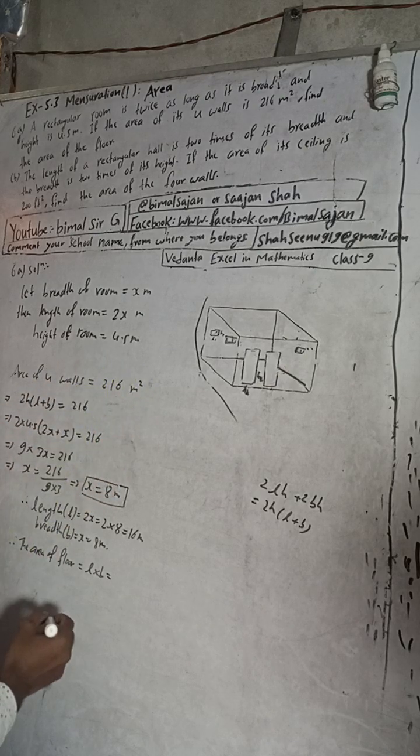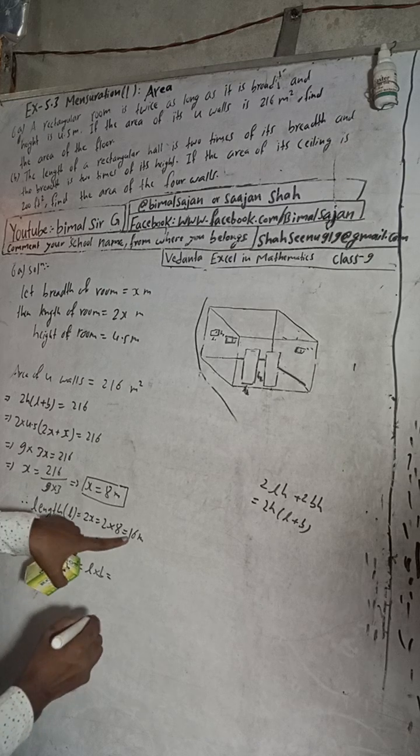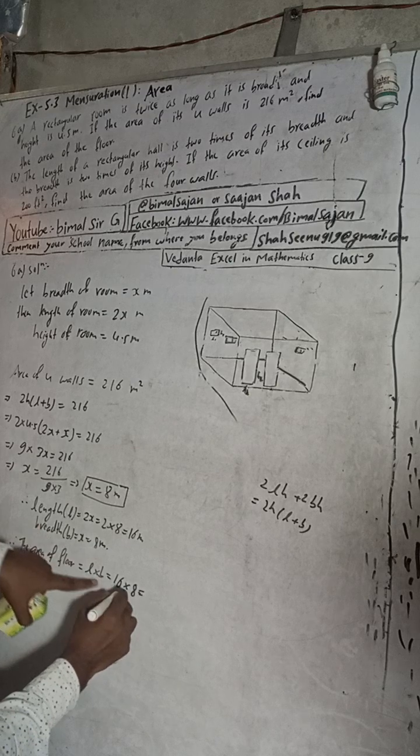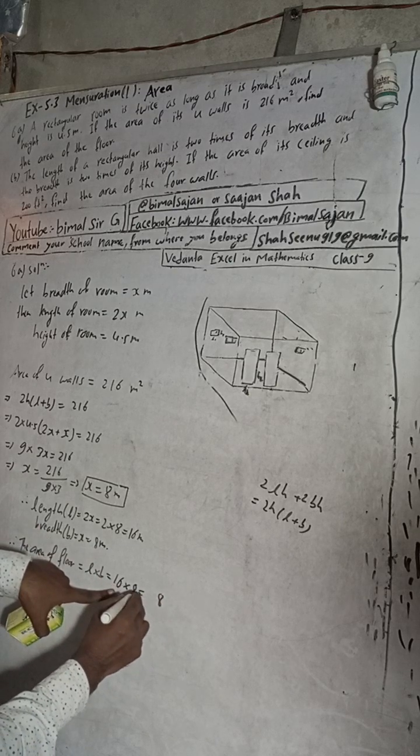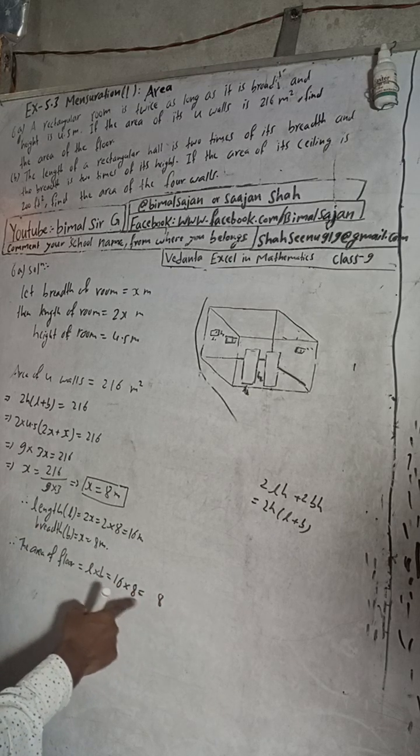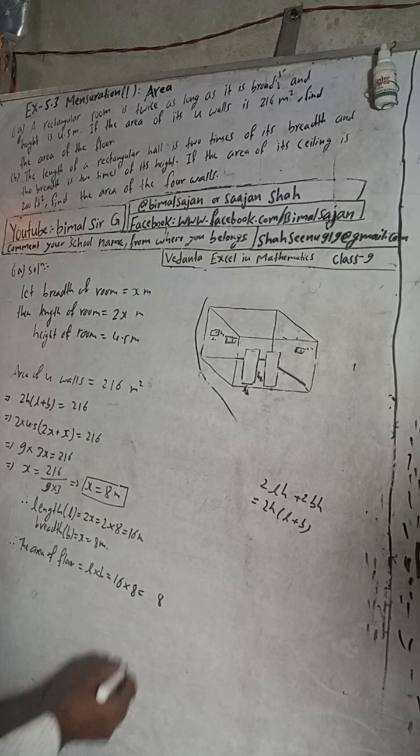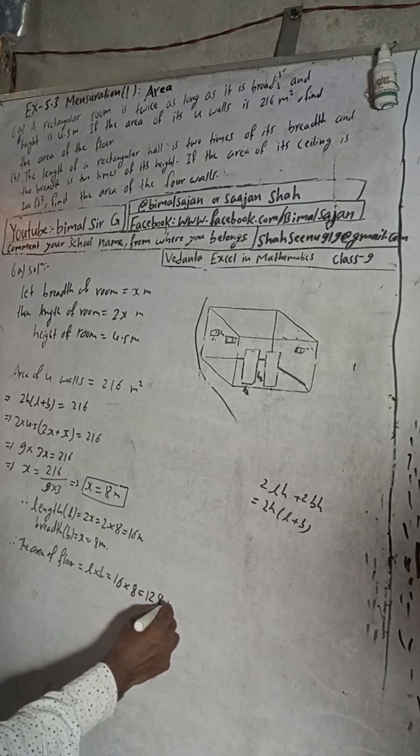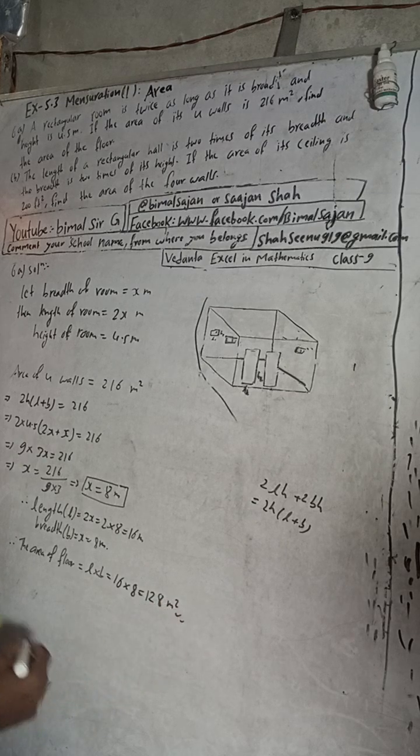L times b equals 16 times 8. 8 times 6 is 48, and adding gives us 128 meters square area of floor. The book answer is correct.